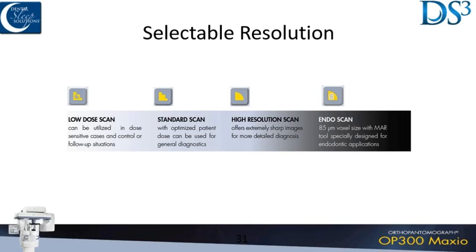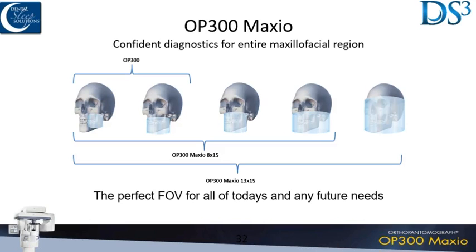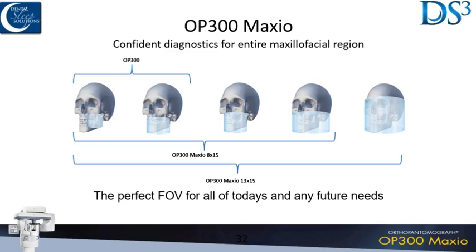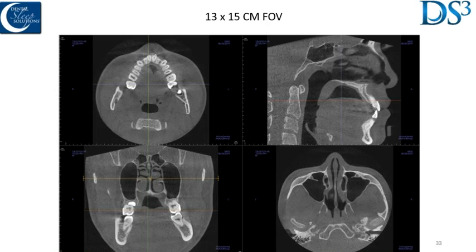There are different sizes and different fields of view. Over towards the right on that chart, you can do airway with the last two fairly easily. The last one's better — that's the one I have because you get everything in one image. If you want to include the nasal airway in addition to the oral airway and the teeth, you may have to take separate images depending on your unit. This is what a 13 by 15 field of view looks like — we can see everything from the nose to the sinuses to the airway down to the epiglottis and back to the TMJ joints.